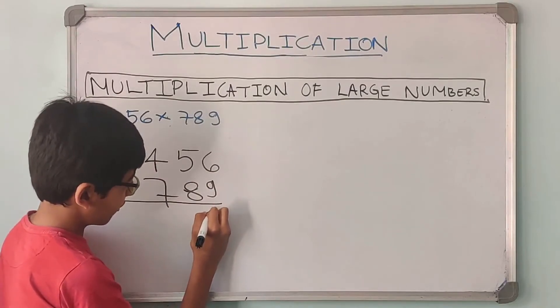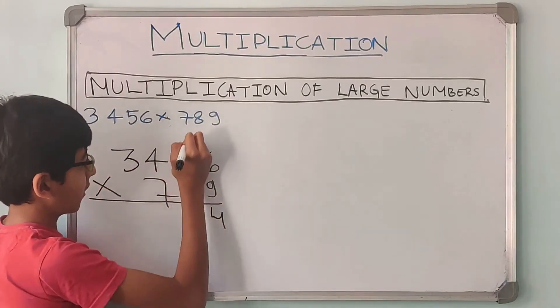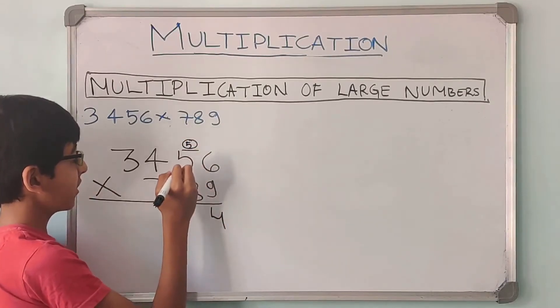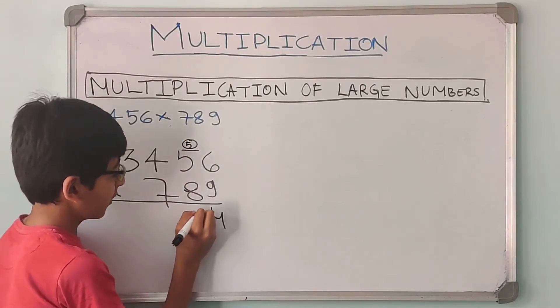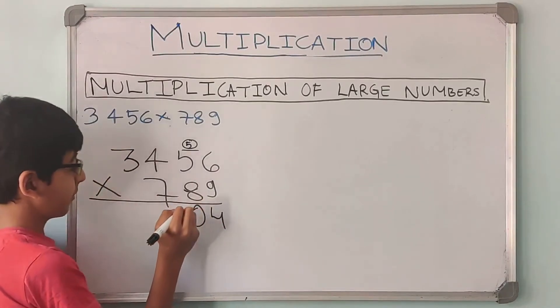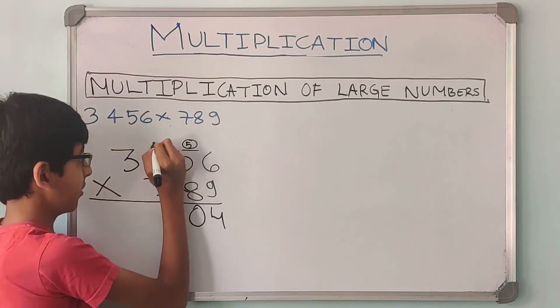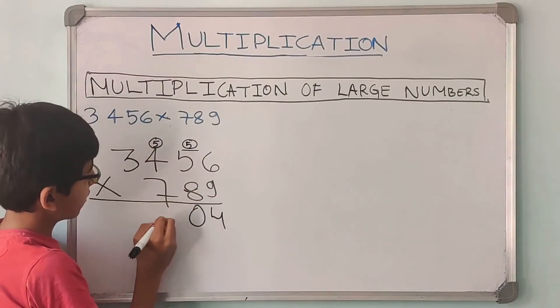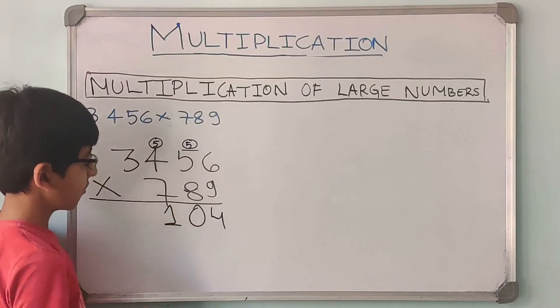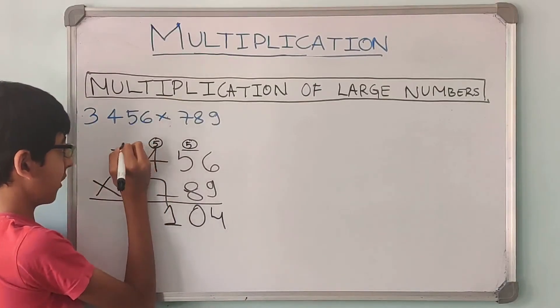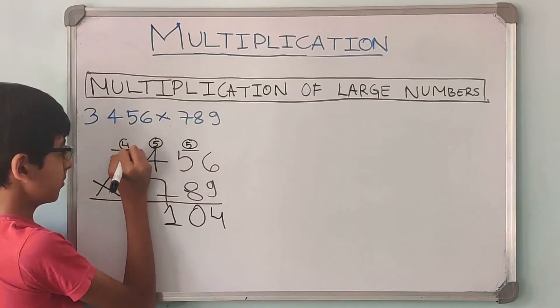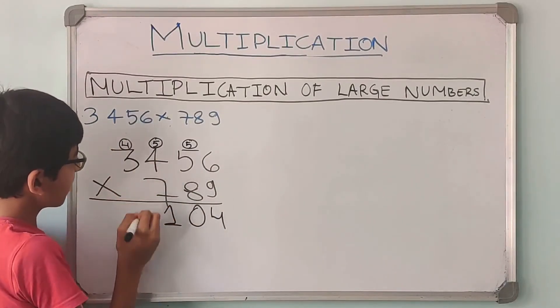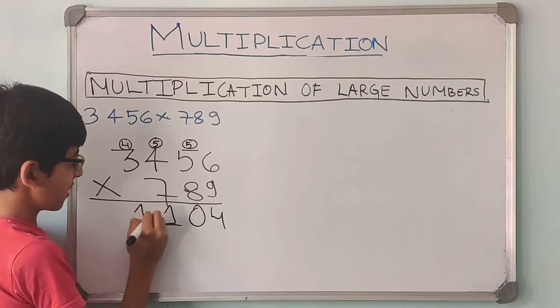So now we have to multiply first with 9, then with 80, then with 700, because we expand the number like that. So first we multiply by 9. 9 into 6 is 54. 4 written down, 5 comes up. Then 9 into 5 is 45, plus 5 is 50. 0 is written down, the 5 is carry forward. 9 into 4 is 36, plus 5 is 41. 1 comes down and then the 4 comes forward. 9 into 3, 27 plus 4 is 31.